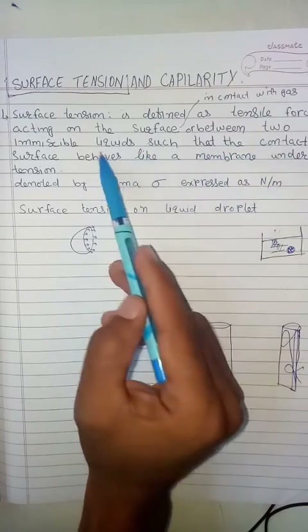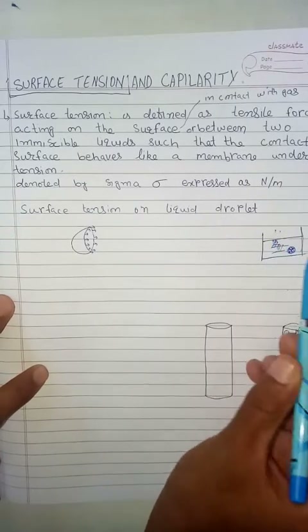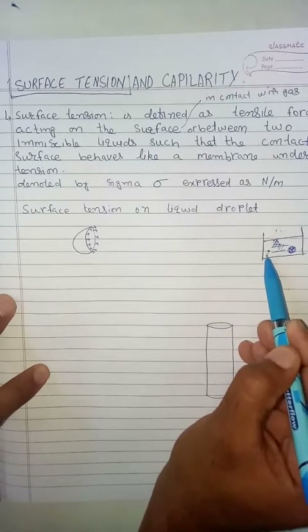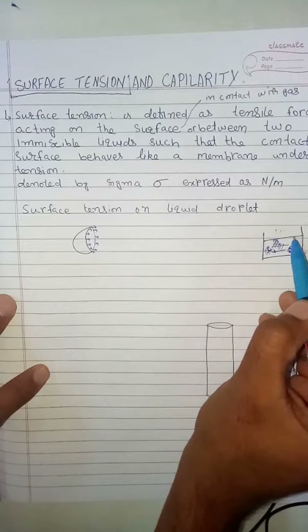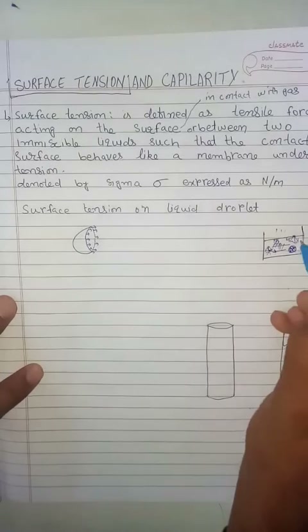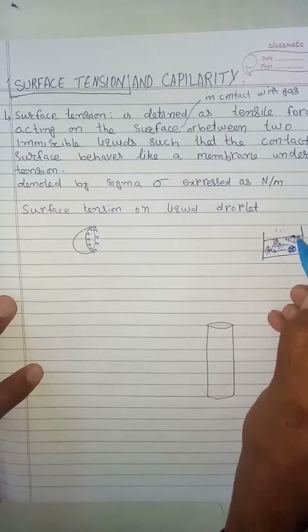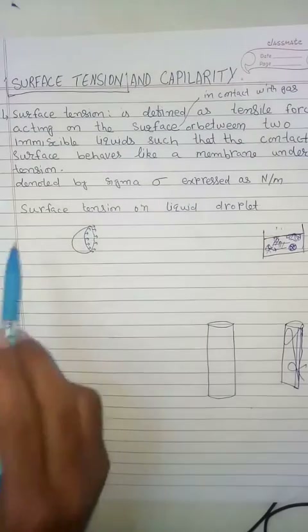Such that the contact surface behaves like a membrane under tension. When there is a liquid in a container with gas above it, any particle inside the liquid has equal forces applied in all directions. But if we take a particle on the surface, all the particles below it will try to attract it in the downward direction, so there will be a net force downward. This is actually surface tension — it develops in the upper layer of the liquid surface in contact with gas, or between two immiscible liquids.